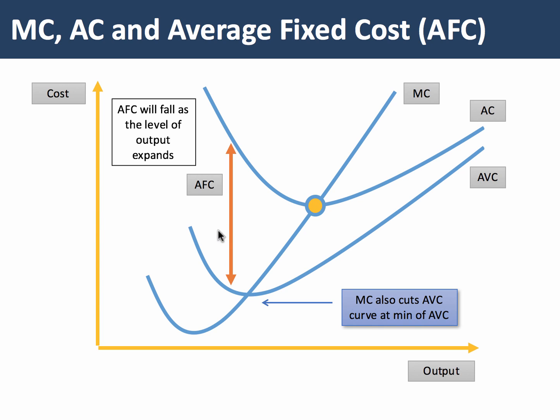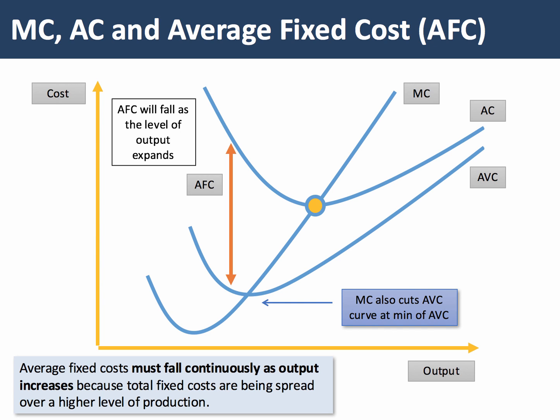Notice this gap is getting smaller and smaller. Average fixed cost is falling because total fixed costs remain the same. As we produce more output, the fixed cost per unit must fall because the fixed costs are being spread over a wider, higher level of production.